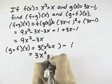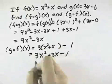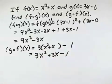Multiplying that out, we get 3x squared plus 3x minus 1, and there are no like terms to combine in that problem.